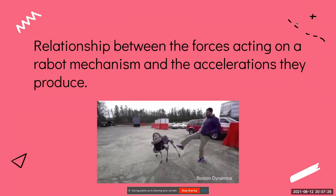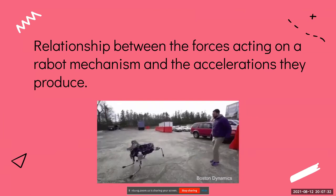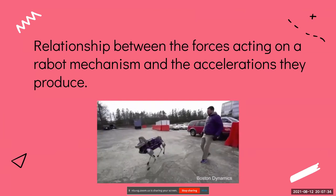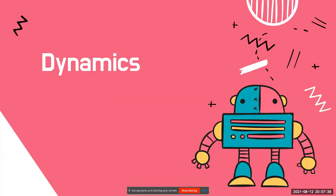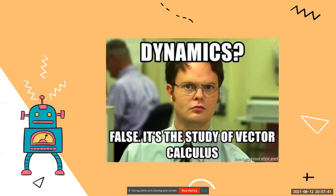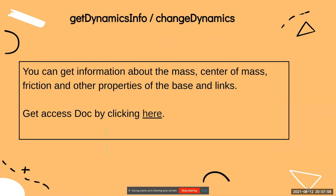There's a relationship between the force acting on a robot mechanism and the acceleration it produces — that is dynamics. Basically, you can say it is the study of vector calculus. You have physical force parameters like buoyancy, friction, and damping acting in the real world, and you can add all that into the virtual world pipeline. The pipeline has built-in functions for that: `getDynamicInfo` and `changeDynamics`.